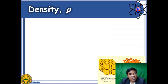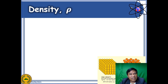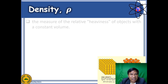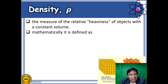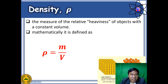Understanding fully the concept of fluids leads us to study first the very fundamental concept of density. Density is denoted by the Greek letter rho and is defined as the amount of matter contained in a certain space or volume. Mathematically, this is just the ratio between mass and volume, where mass is denoted by M and volume is denoted by capital V.